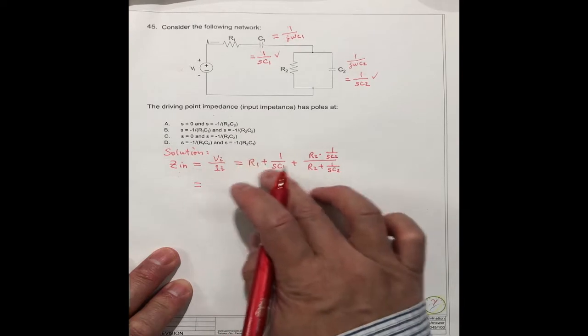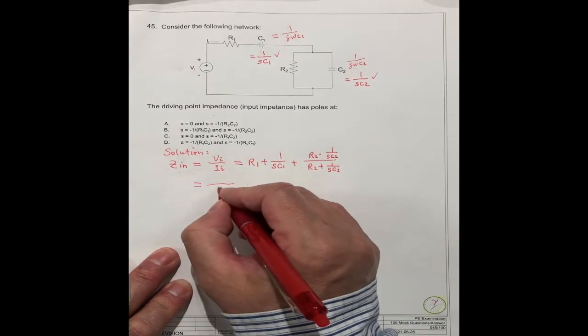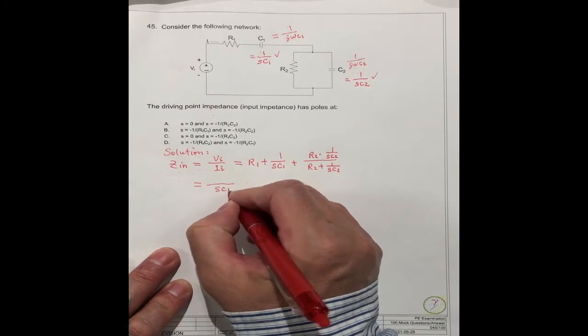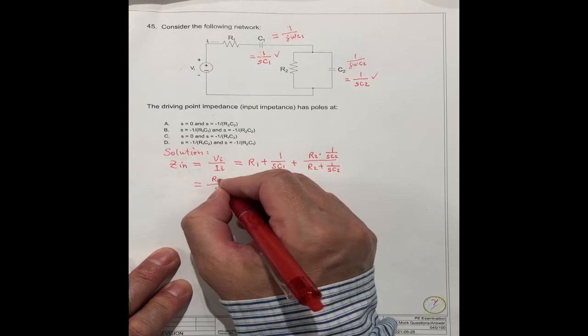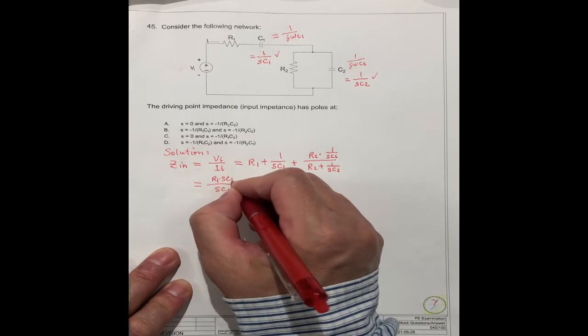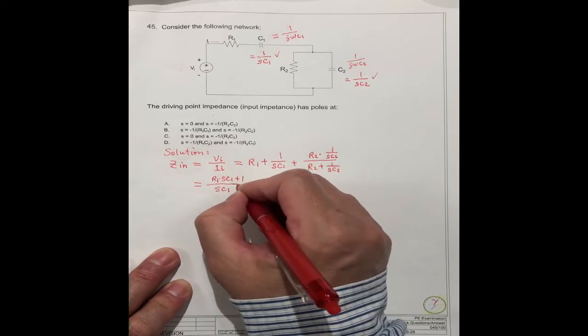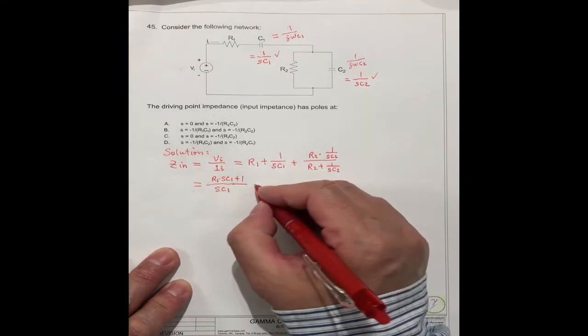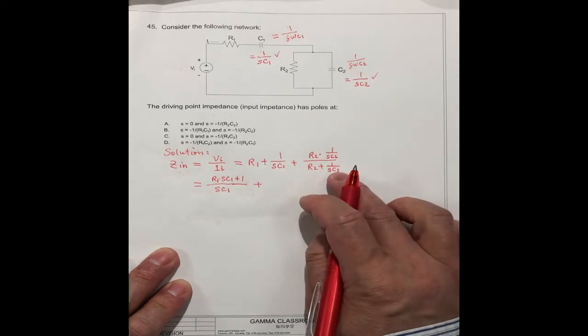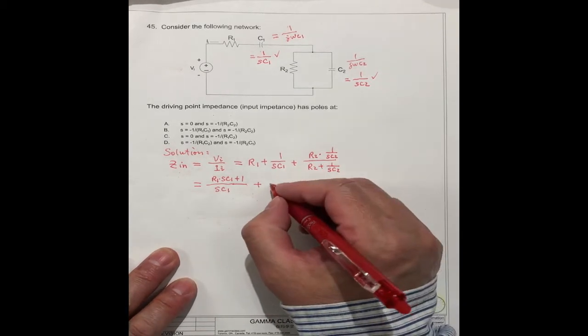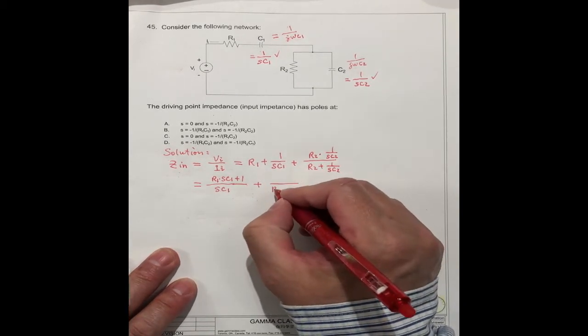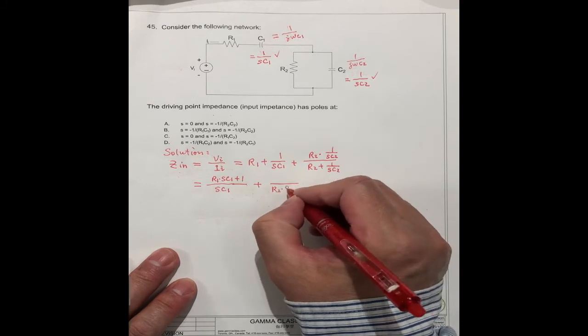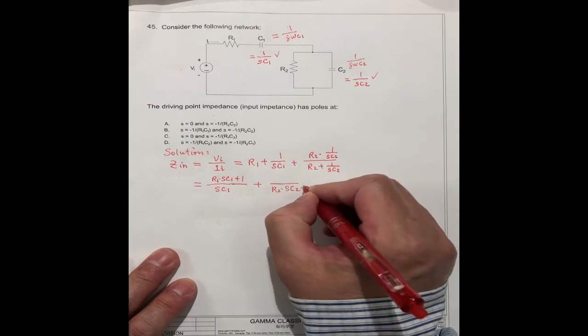Do this one first, you can get (SC1·R1 + 1)/(SC1) plus this one we can simplify to (SC2·R2)/(SC2·R2 + 1).